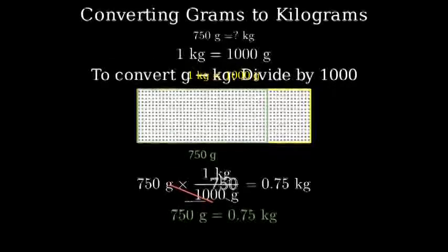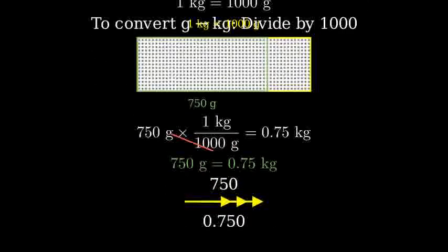Here's another way to think about it. Since we're dividing by 1000, we can simply move the decimal point three places to the left. 750 becomes 0.750, or simply 0.75.